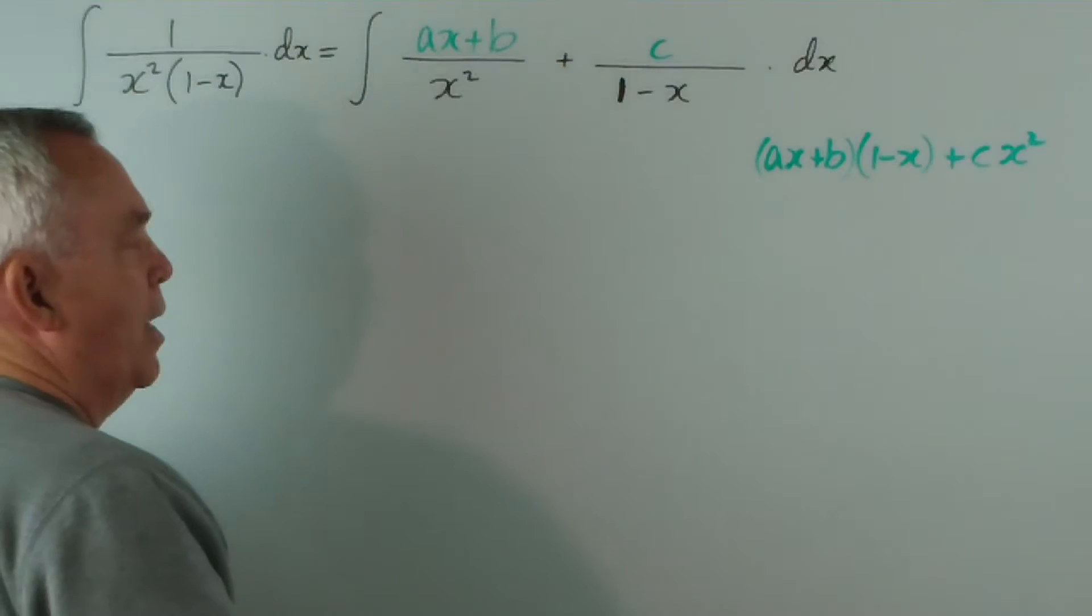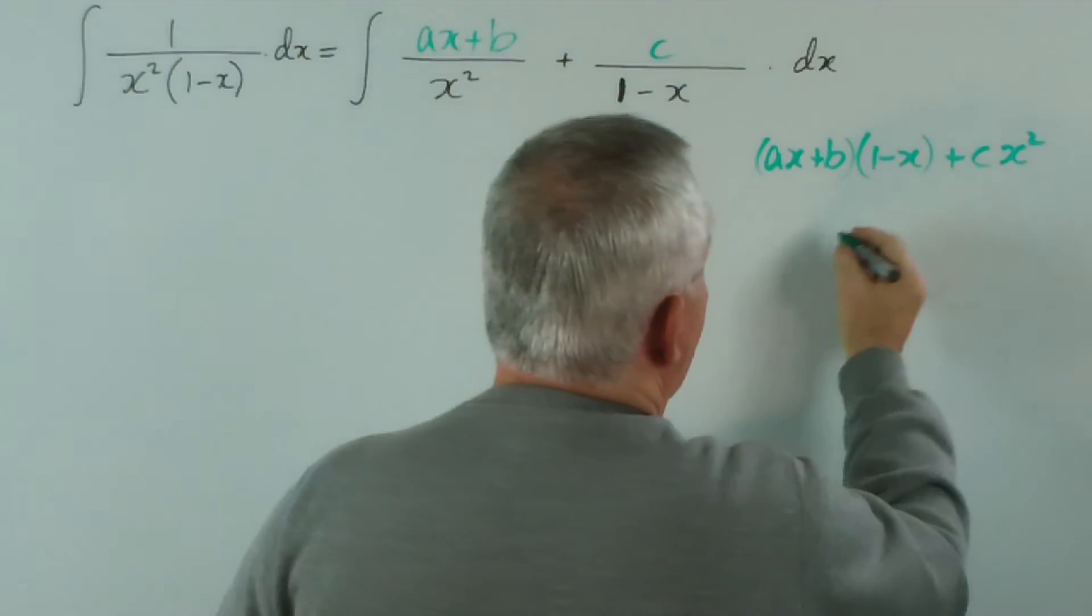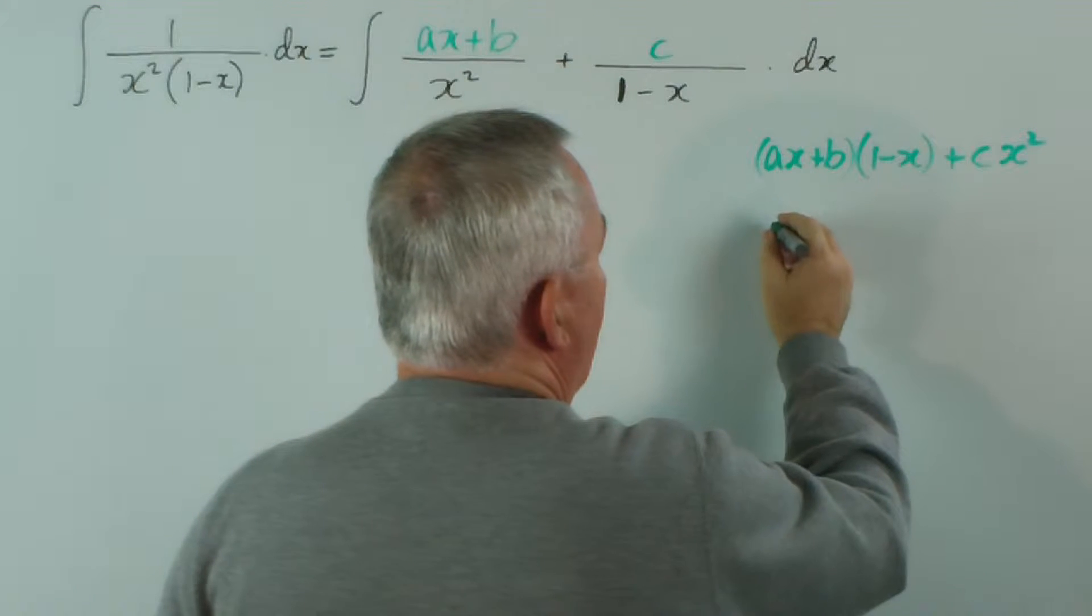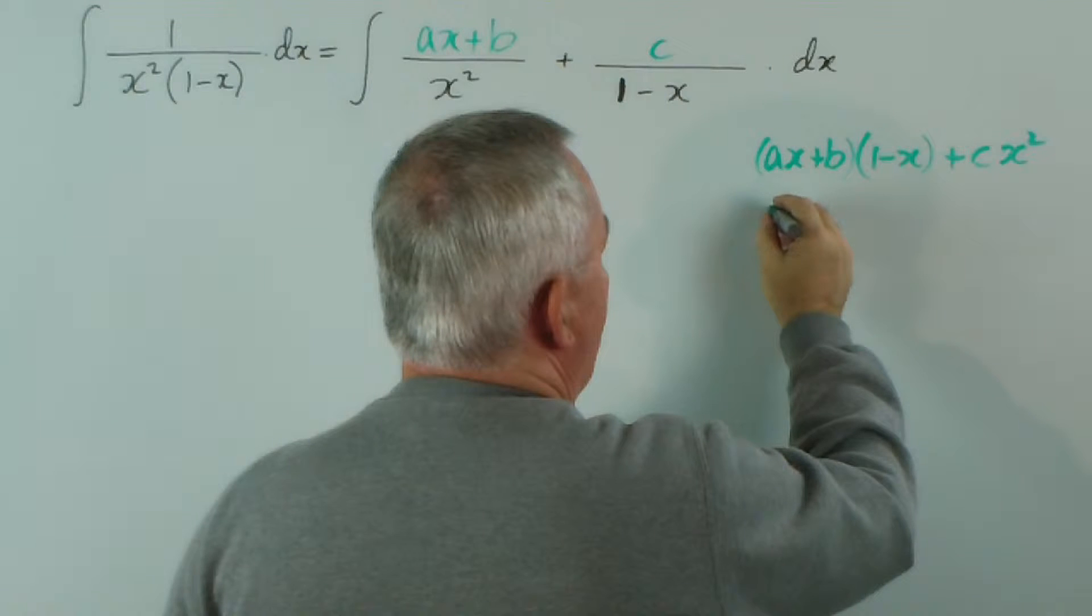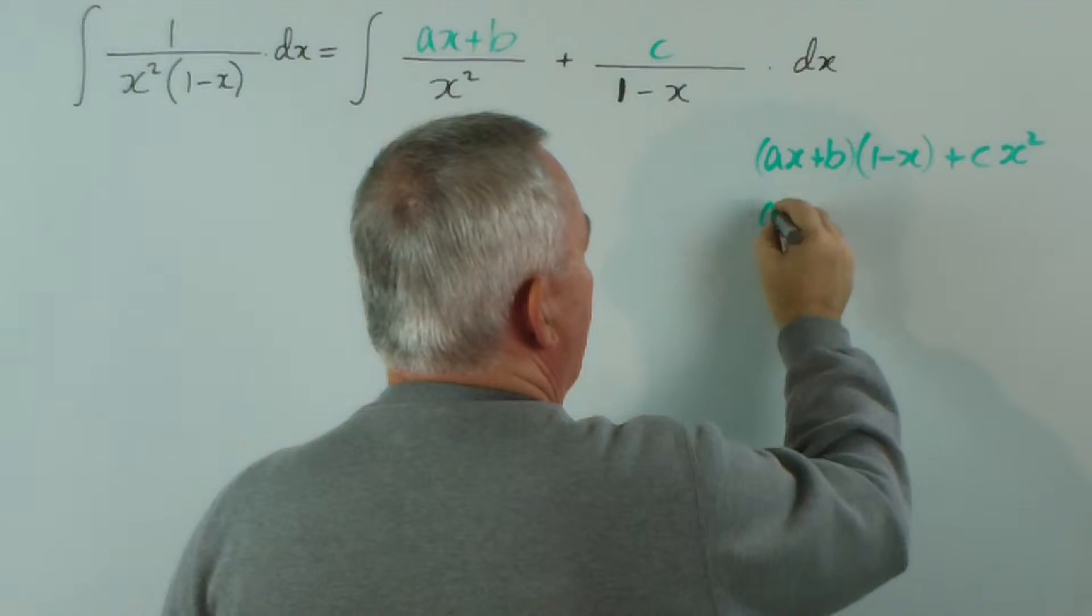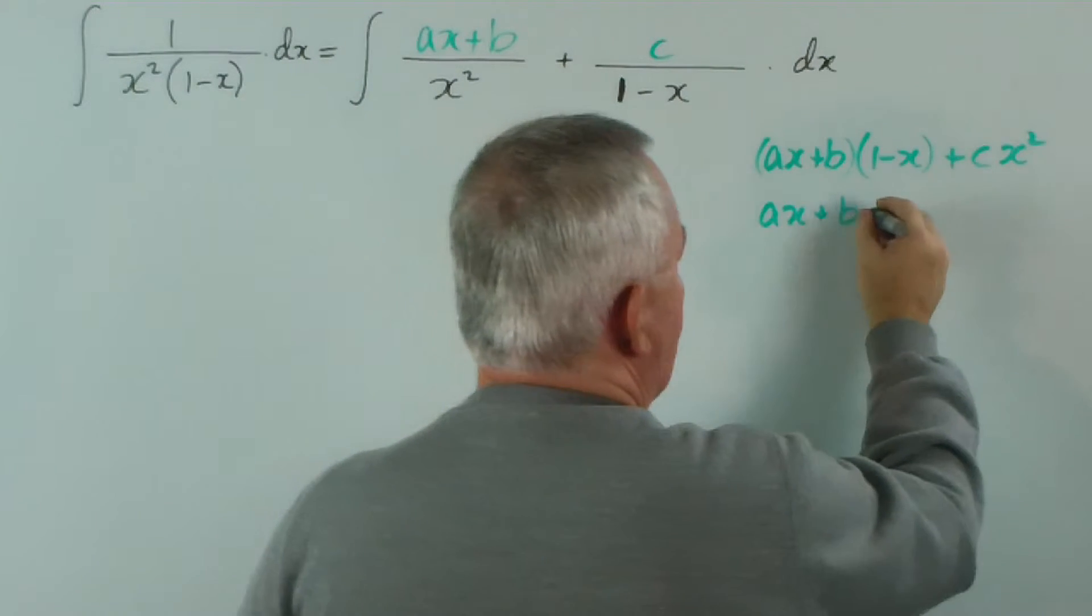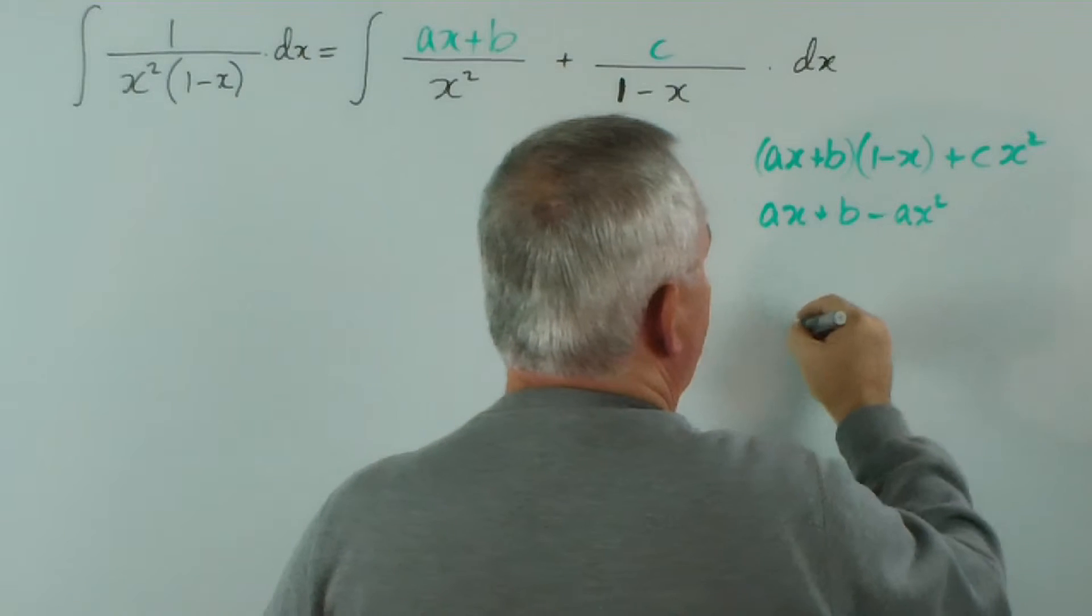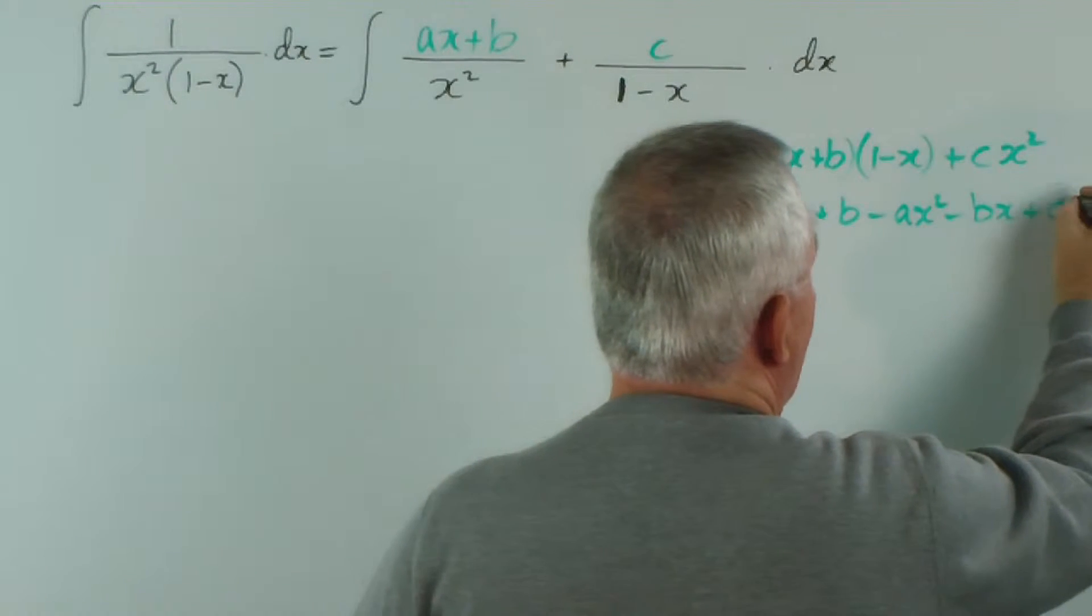That would be our numerator. Now, of course, we want our numerator to equal 1. So, expanding... yeah, expanding is probably the easiest way. We get ax plus b, that's 1 times that, minus x times that is minus ax squared minus bx plus cx squared.